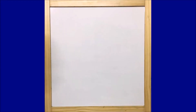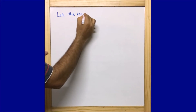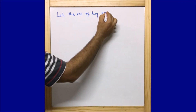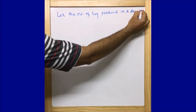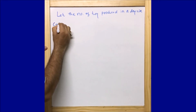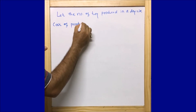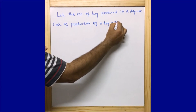Moving on to the solution — how do we extract the figures hidden in this question? We let the number of toys produced in a day be equal to x. So we are considering the number of toys produced in a day as x. Now as per the question, the cost of production of a toy on that particular day is equal to 55 minus x, because the cost of production of each toy was found to be 55 minus the number of toys. So the cost of production of a toy is equal to 55 minus x.